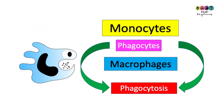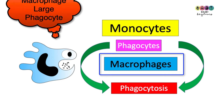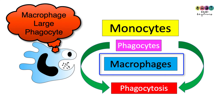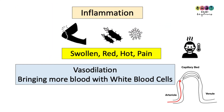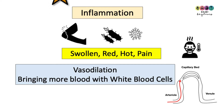So white blood cells — in particular monocytes, which are phagocytes capable of phagocytosis — are crucial to the general defense system. We're particularly interested in these large phagocytes, the macrophages, which we remember as 'big munchers.' Inflammation is also a very important part of the general defense system.